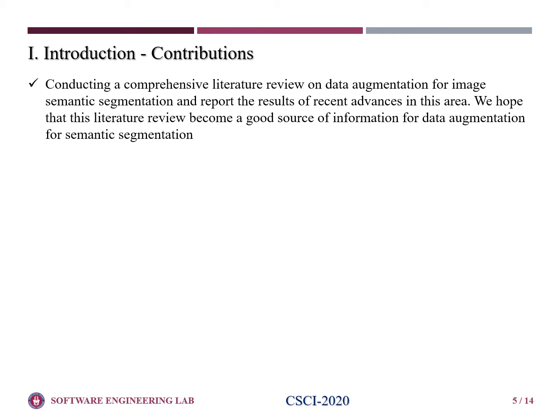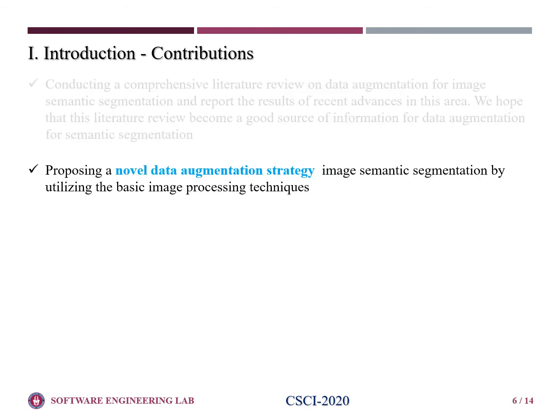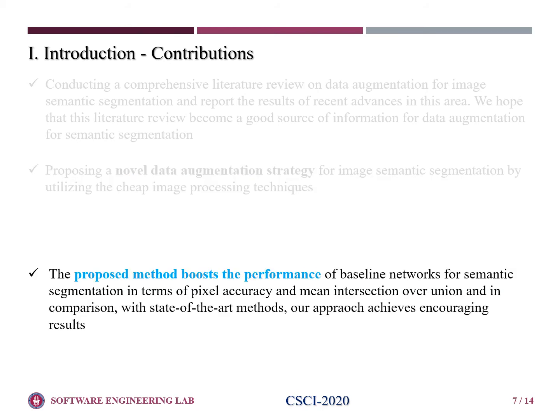Our contributions in this research are as follows. We conduct a comprehensive literature review on data augmentation for image semantic segmentation and report the results of recent advances in this area. We hope that this literature review becomes a good source of information for data augmentation for semantic segmentation. Further, we propose a novel data augmentation strategy for image semantic segmentation by utilizing basic image processing techniques. The proposed method boosts the performance of baseline networks in terms of pixel accuracy and mean intersection over union, and in comparison with state-of-the-art methods, our approach achieves encouraging results.